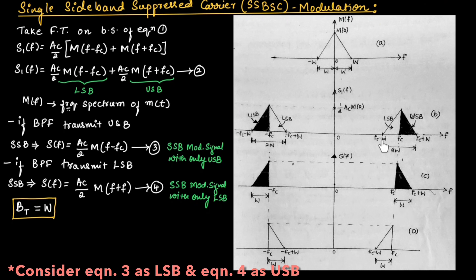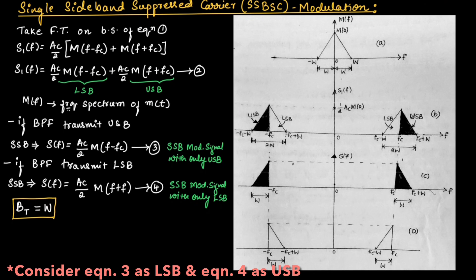If you consider double sideband suppressed carrier, the transmitted bandwidth is 2W. So this is one of the advantages of SSB-SC modulation: it requires only half the bandwidth required by an AM signal or DSB-SC modulation. Due to the suppressed carrier and only one sideband being transmitted, the transmitted power is also saved, and it also reduces the noise interference in the signal. These are a few advantages of single sideband suppressed carrier modulation.